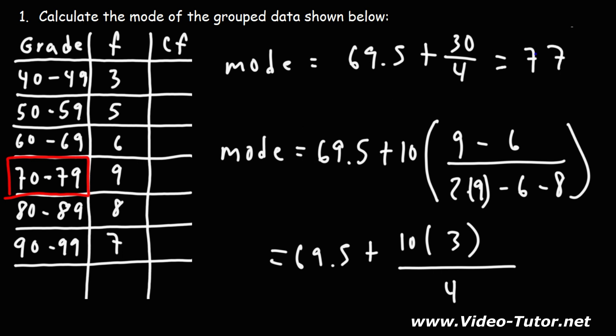So 77 is the mode of the grouped data here, and it makes sense because 77 is within the modal class. It's between 70 and 79. And we can see why it's closer to 79 than 70. Notice that the majority of the numbers, they're towards the higher grades. More students scored higher than 70. We had less students scoring lower than 70. So the mode is going to be in the upper range of this interval since we have the highest frequencies there.